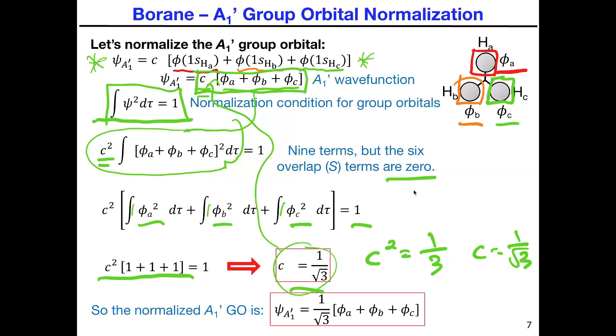The normalization constant when included in this discussion gives you now this one over root three multiplied times that entire group orbital wave function. So that is now normalized. The way you know this is normalized is if you square each of these, if you square the coefficient that's in front here, basically one over root three squared, that's one third, and do the same thing for phi b and phi c. You see that's one third, one third, and one third. So the sum of that whole group orbital is one, and that basically is the normalization condition.